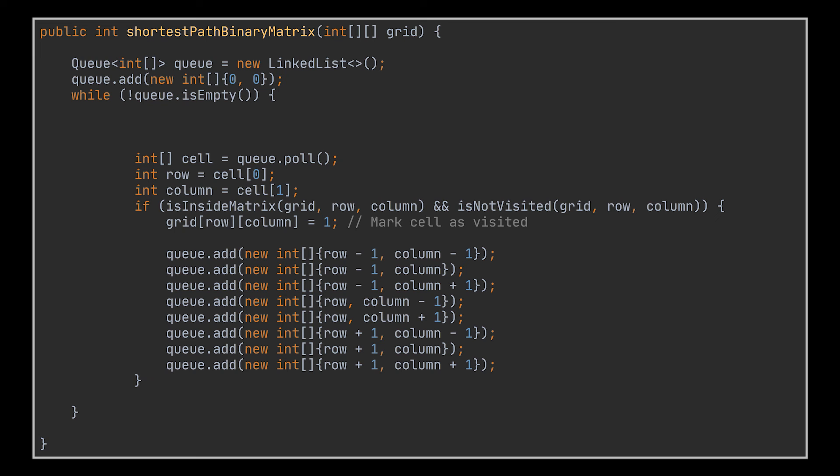Okay, at this point we have the level order traversal, but what about our answer? We are still missing the piece that retrieves and increments the shortest path variable. At no point in this logic are we counting how many levels we went through before reaching the target cell. While traversing binary trees in a level order manner, we kept track of the levels we traversed by introducing a size variable allowing us to treat each while loop iteration as a single level.